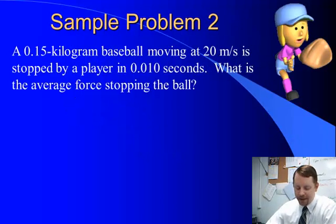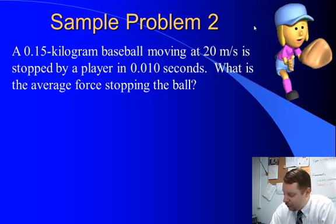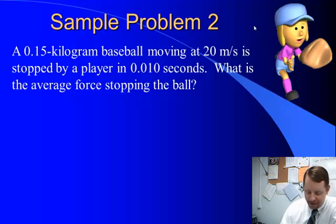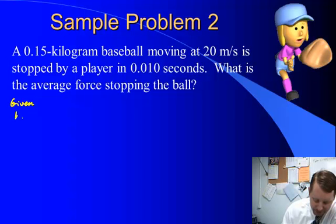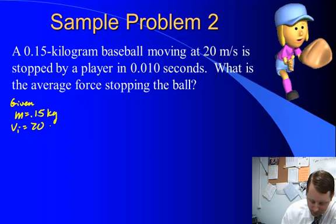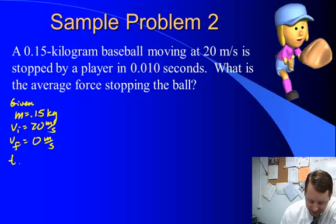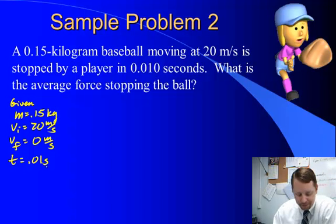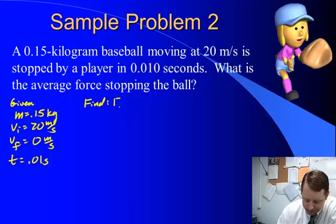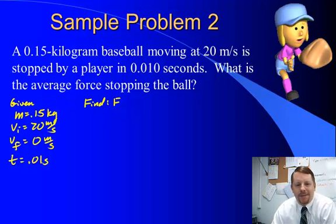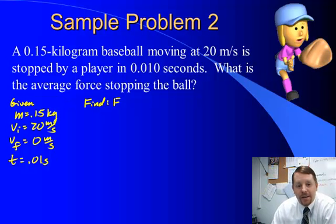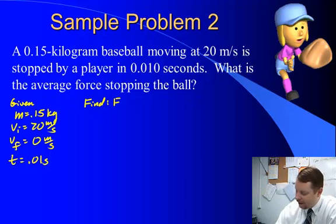Example two: a 0.15-kilogram baseball moving at 20 meters per second is stopped by a player in 0.01 seconds. What is the average force stopping the ball? We're given mass equals 0.15 kilograms, initial velocity equals 20 meters per second, final velocity equals 0 meters per second, and time equals 0.01 seconds. We want to find the force. Using Newton's second law, I have mass but not acceleration, so let's figure out acceleration first using our kinematic equations.